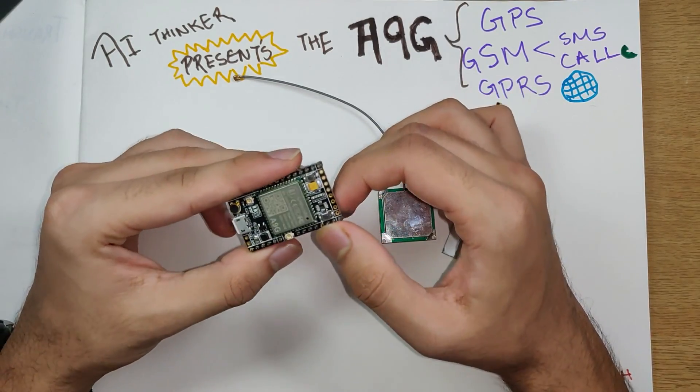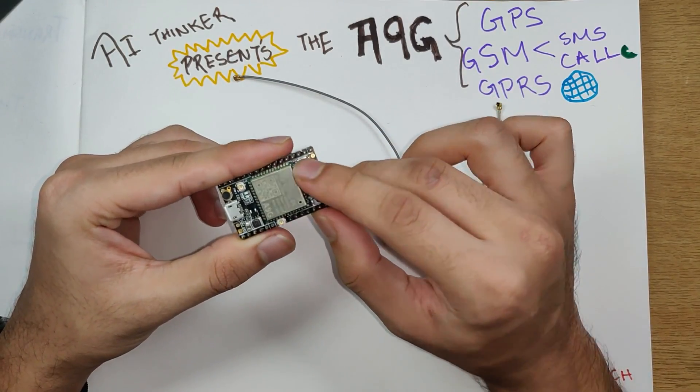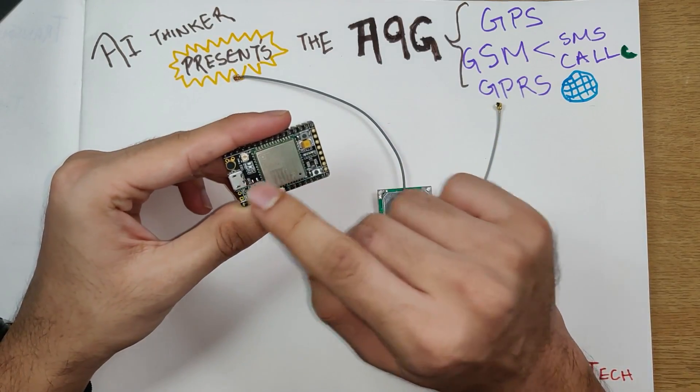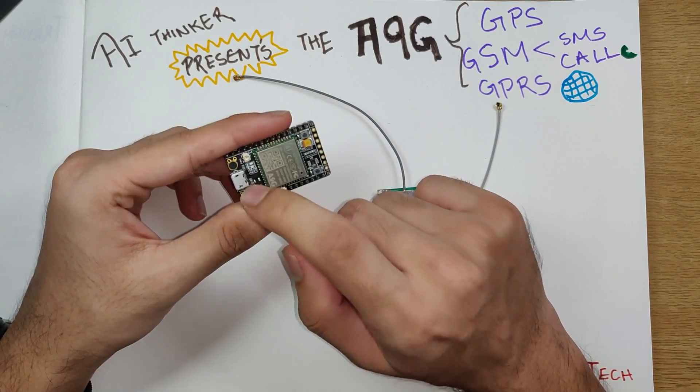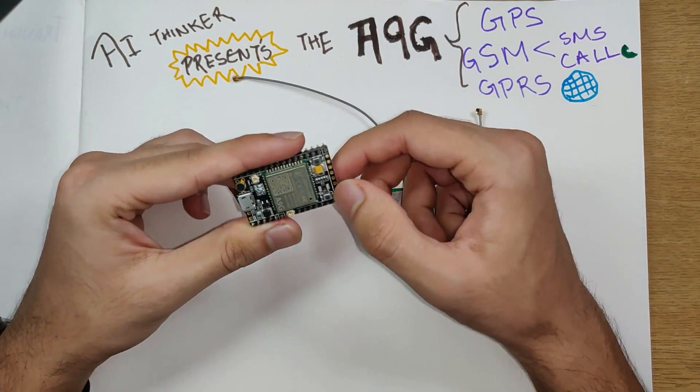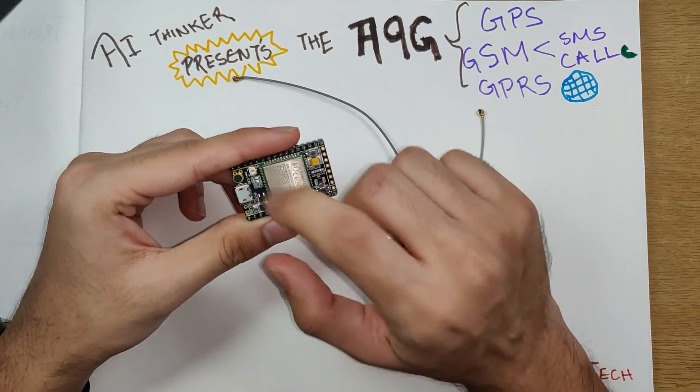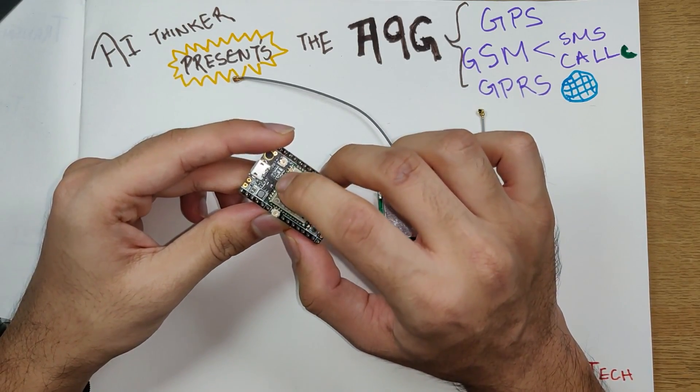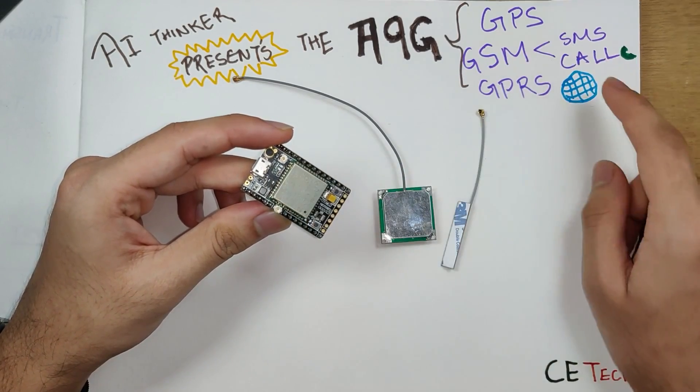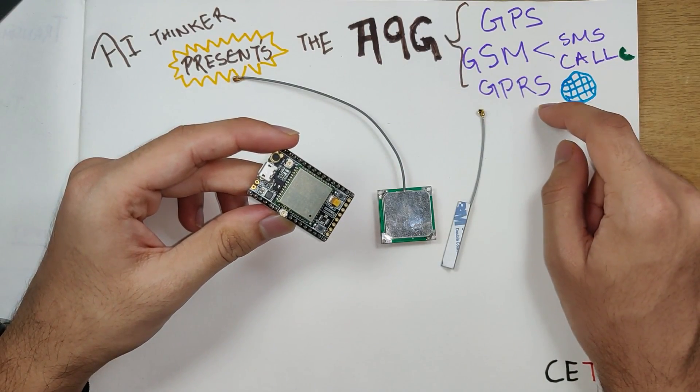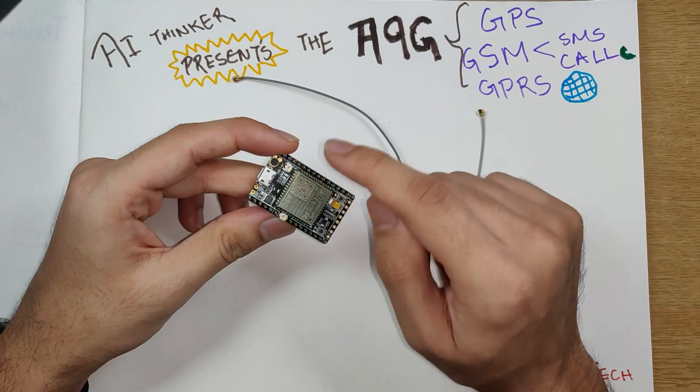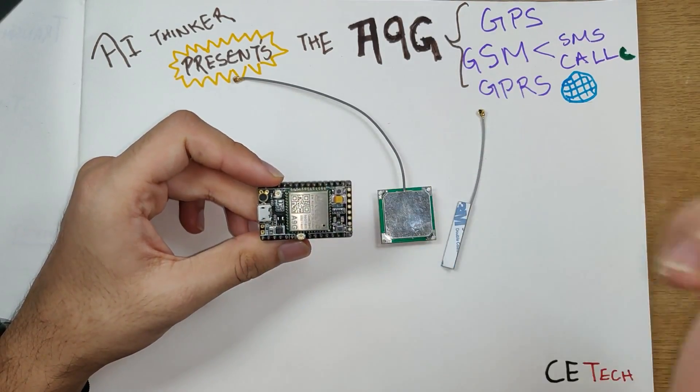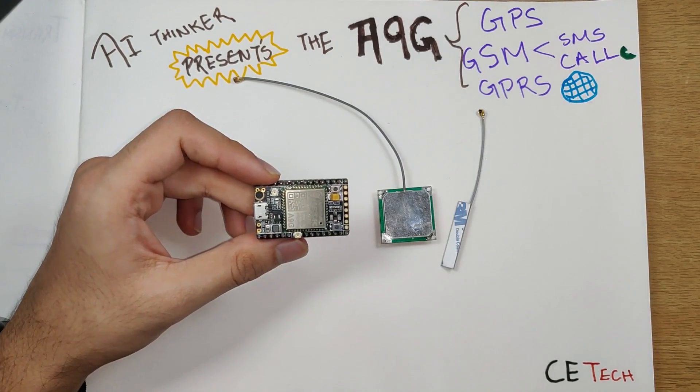These two pins are used to upload the bootloader or the firmware onto the module. But these two pins, which are the TX and RX towards the right hand side, are used for sending and receiving AT commands. Essentially, these are the pins that we will be using to connect to our USB to serial board. Apart from that, there are a lot of GPIO pins that can be controlled using the A9G.